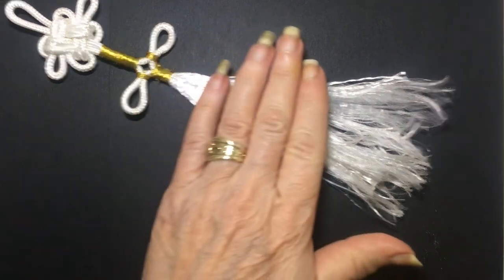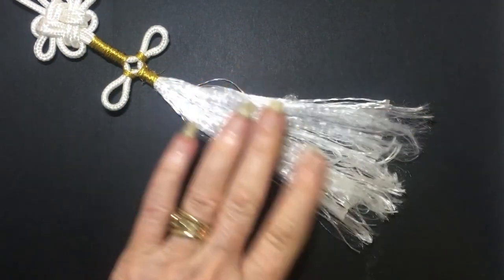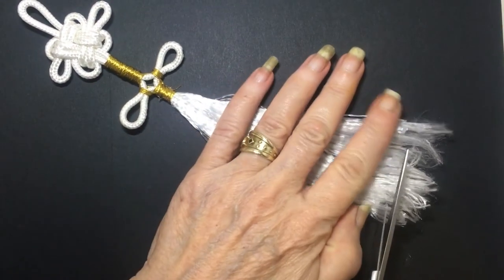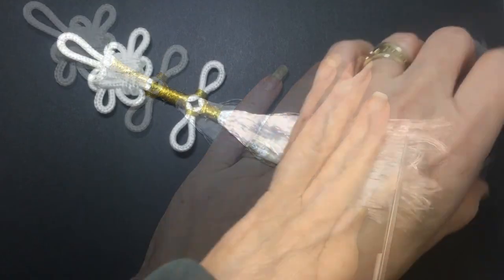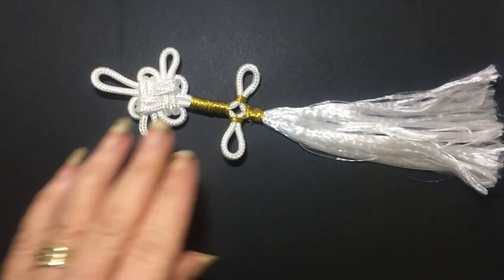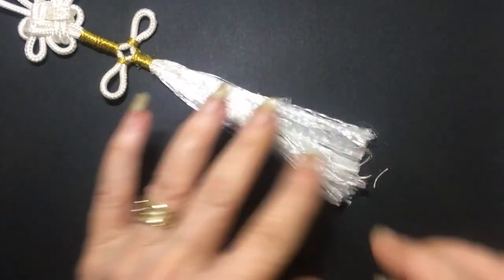Once you've teased it all out, you have something that looks like that. Now all you have to do is just trim it so that it's all the same. And that's one of the tassels completed.